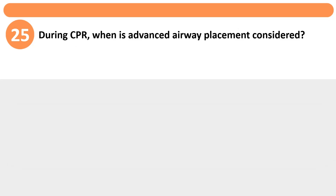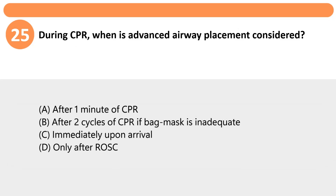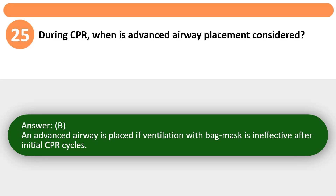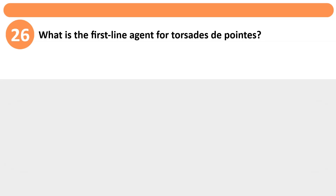During CPR, when is advanced airway placement considered? A. After 1 minute of CPR. B. After 2 cycles of CPR if bag-mask is inadequate. C. Immediately upon arrival. D. Only after ROSC. Answer: B. An advanced airway is placed if ventilation with bag mask is ineffective after initial CPR cycles.